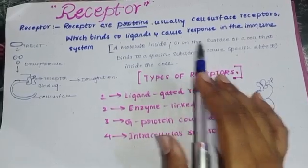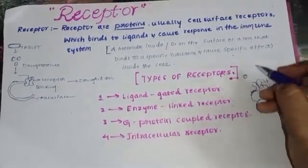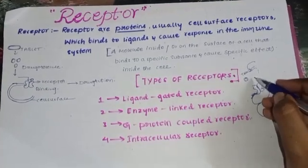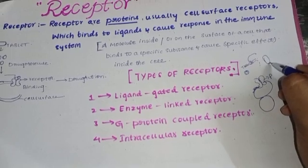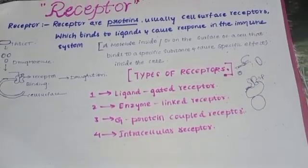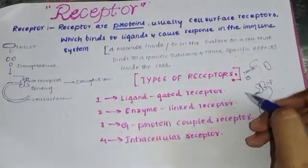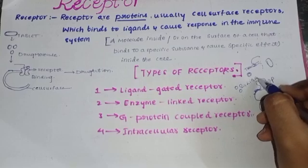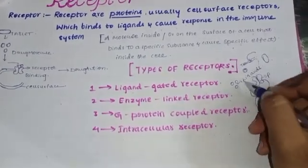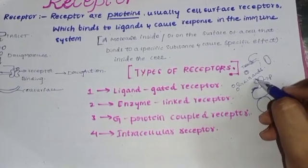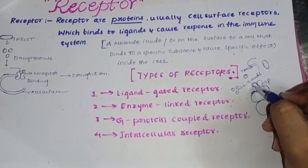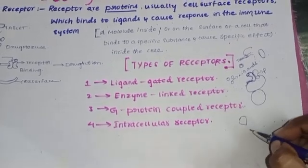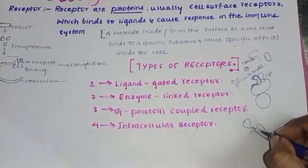Cell surface receptors which bind to ligand and cause a response. Ligands are nothing but molecules. These ligands bind to receptors. One key point: molecules must have the shape that fits the ligand. For example, receptor shape — it is matched to the shape of the ligand. We have to consider this exact fit.